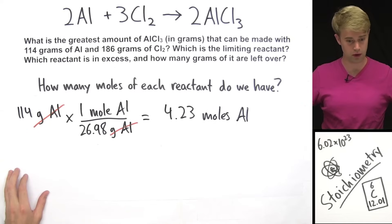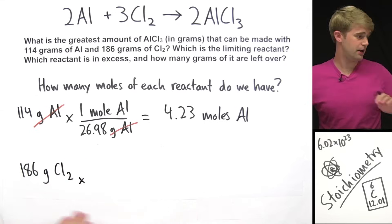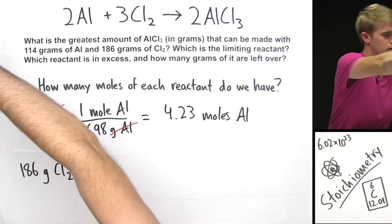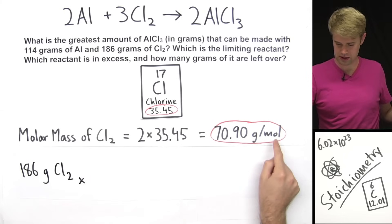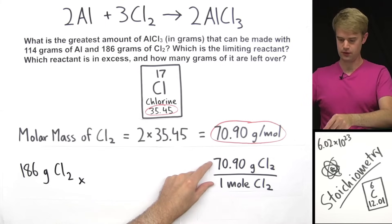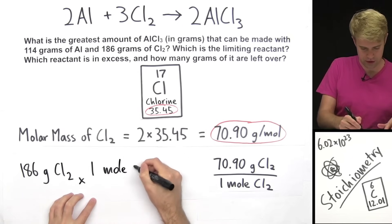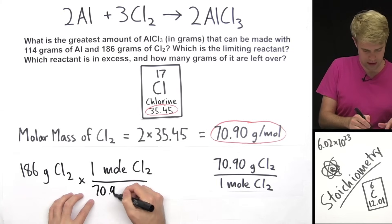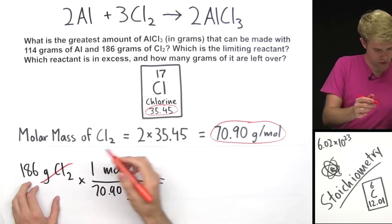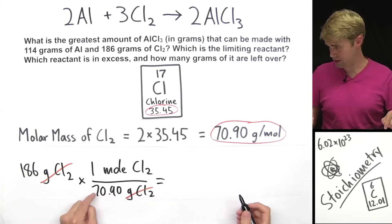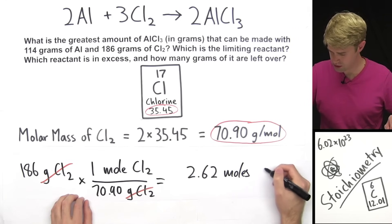Now let's do the same thing for Cl₂. I have 186 grams of Cl₂. I'll multiply that by a conversion factor that expresses the molar mass of chlorine. The molar mass of Cl₂ is 70.90 grams per mole. I want to get rid of grams Cl₂, so I'm going to flip this — put 1 mole Cl₂ on top and 70.90 grams Cl₂ on the bottom. Grams Cl₂ cancels out, giving me 2.62 moles Cl₂.